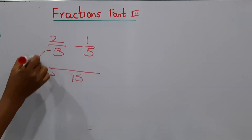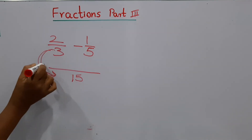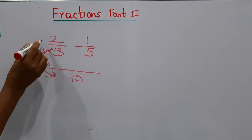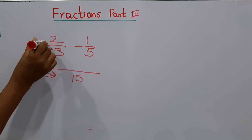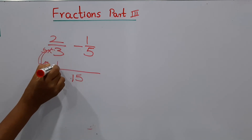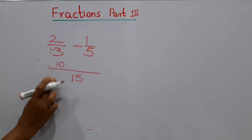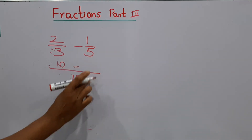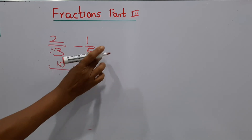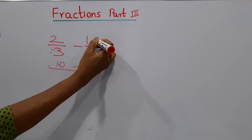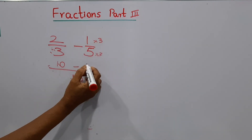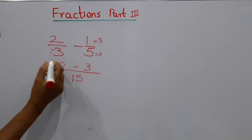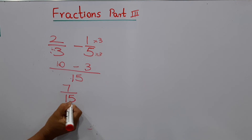How does 3 become 15? Three times 5 is 15. If we multiply the denominator by 5, we have to multiply the numerator also by 5 — so 2 times 5 is 10. Then for the second fraction, 5 times 3 is 15. Multiply the numerator by 3 as well: 1 times 3 is 3. Now subtract: 10 take away 3 is 7. The denominator is 15.